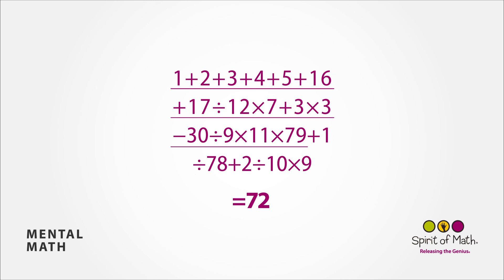Multiply that by 79 and adding 1 is the same as saying 78 squared. So divide it by 78 is just 78. Adding 2 to that is 80, and divide it by 10 is 8, and multiply at the end by 9, which gives you 72.